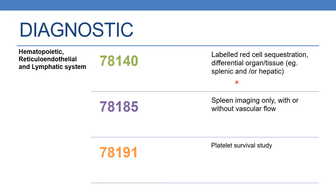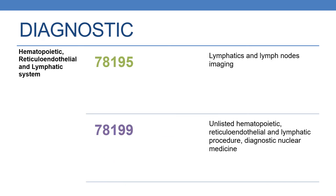For example, splenic or hepatic. The next code is 78185, which deals with spleen imaging only, with or without vascular flow. The next code is 78191, which deals with platelet survival study. The next code is 78195, which deals with lymphatics and lymph node imaging. And finally, 78199, which is the unlisted hemopoietic, reticuloendothelial and lymphatic procedure, diagnostic nuclear medicine.